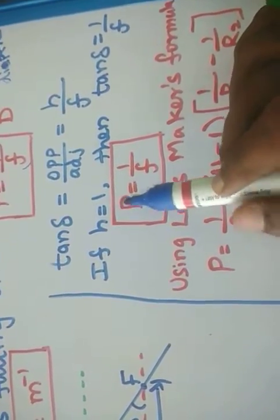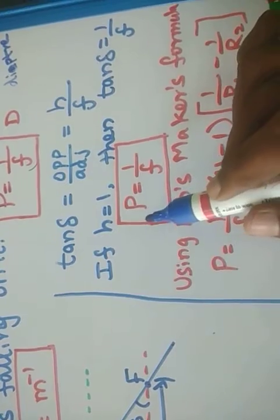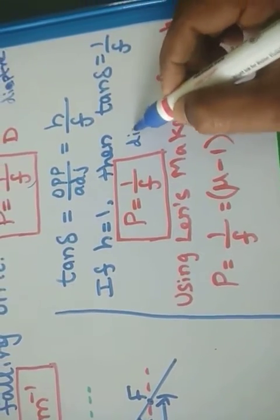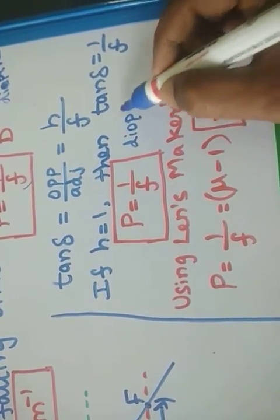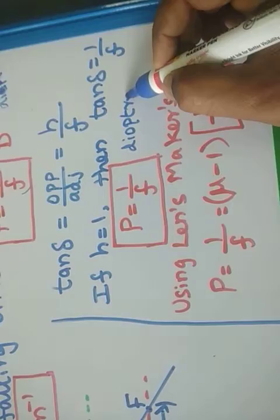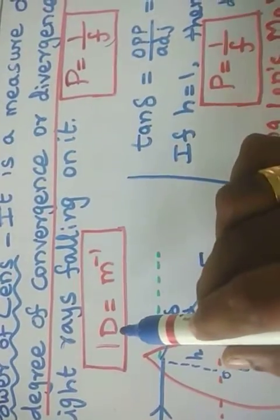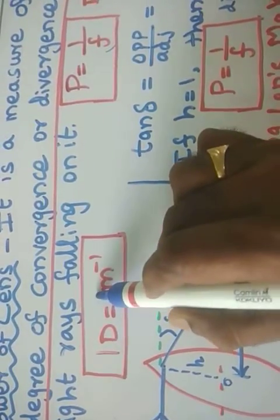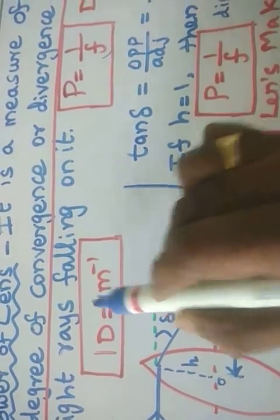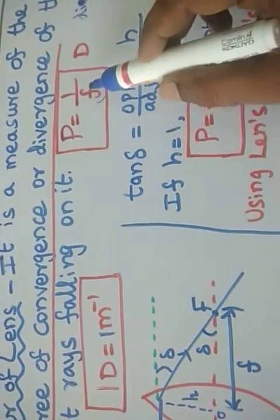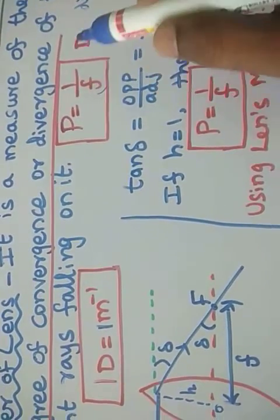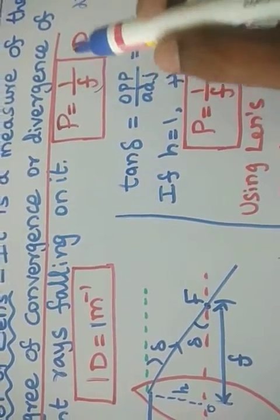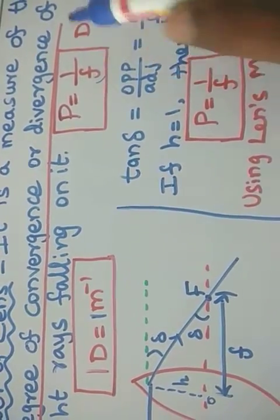So the power of a lens P is equal to 1 over f. The SI unit of power of a lens is diopter. One diopter is defined as 1 meter inverse, because focal length is a length and the SI unit of length is meter, so the unit is meter inverse.